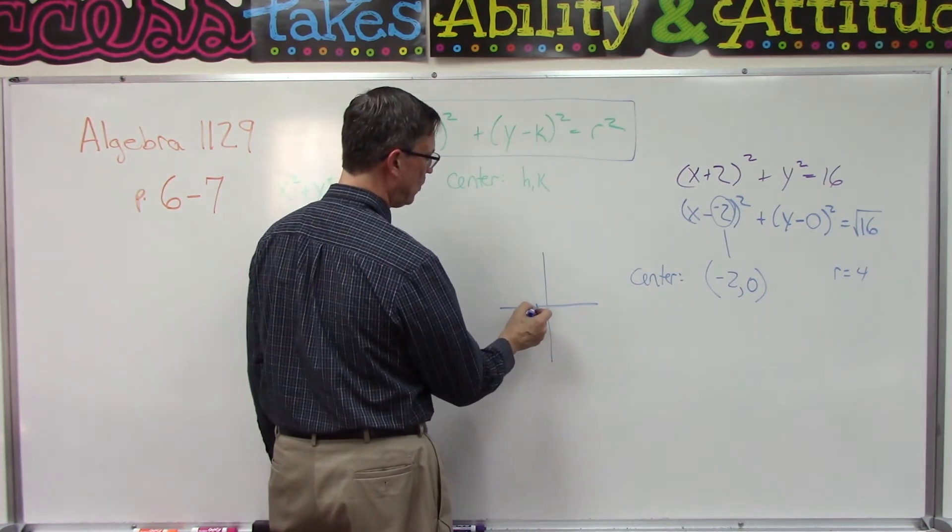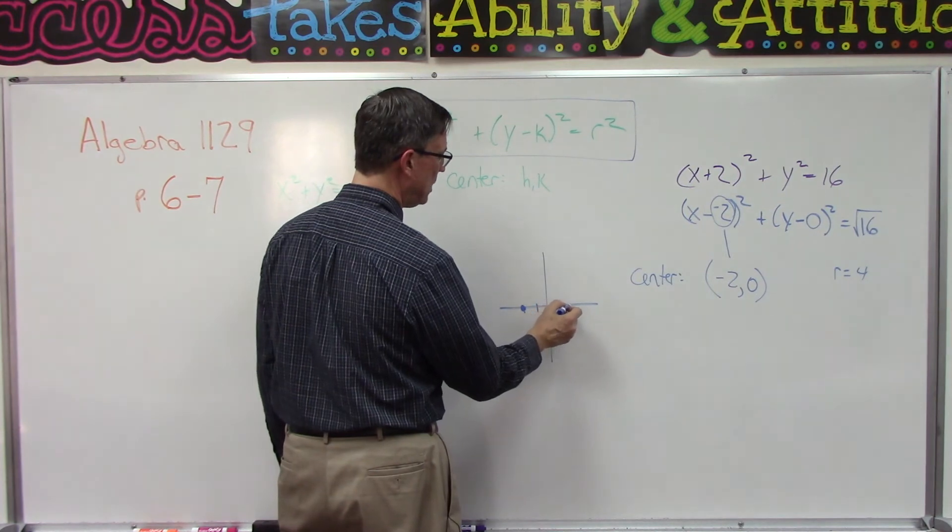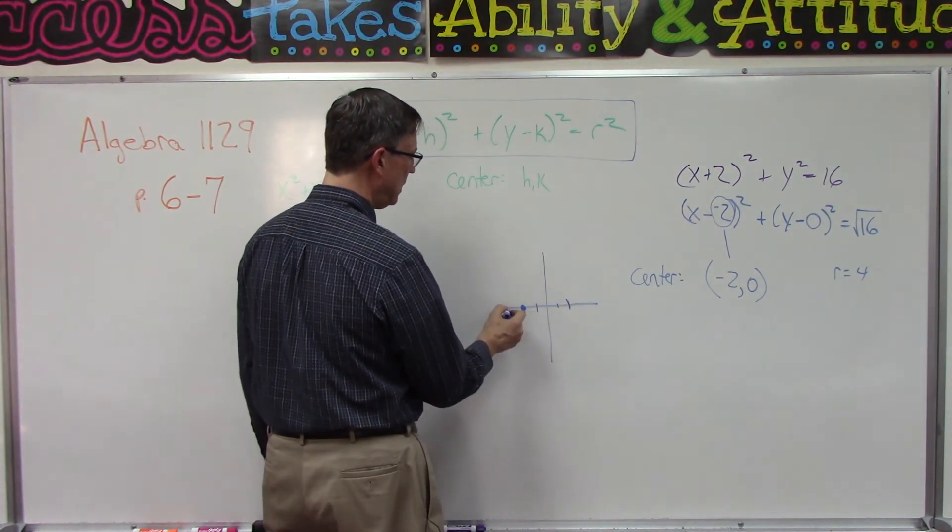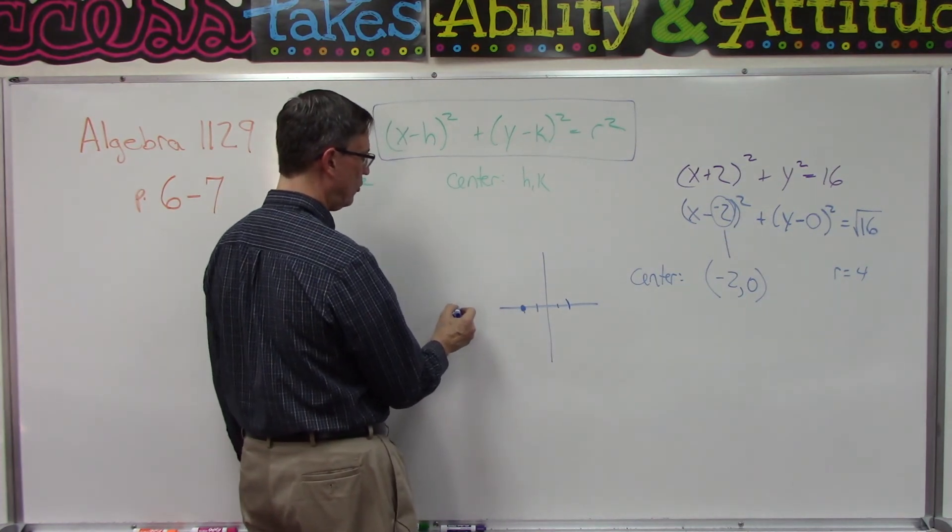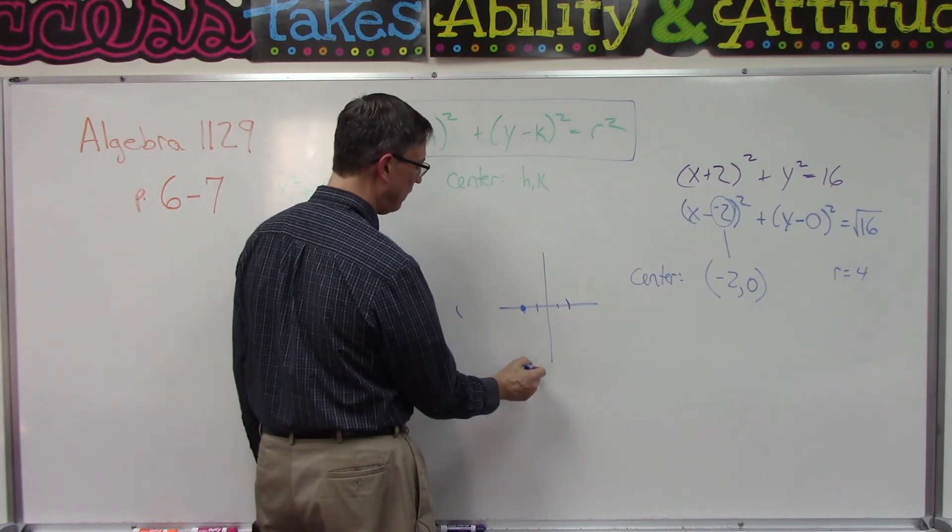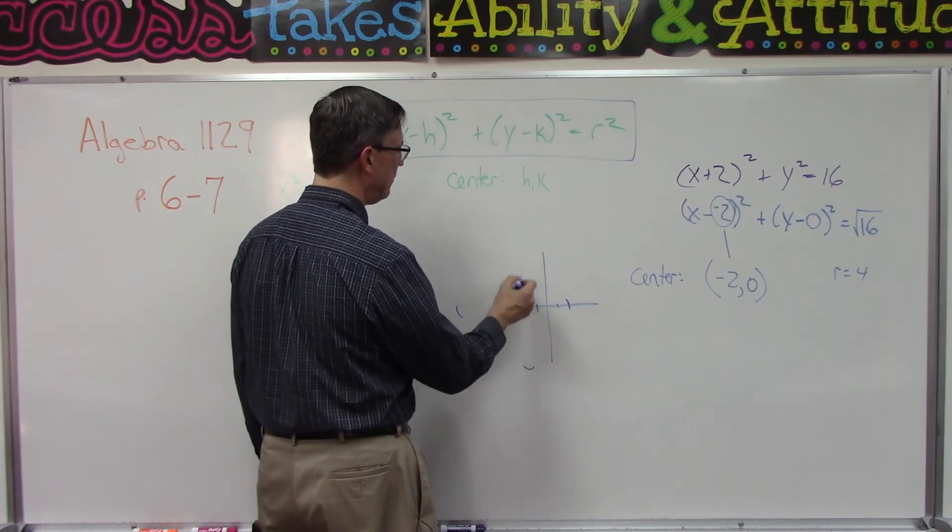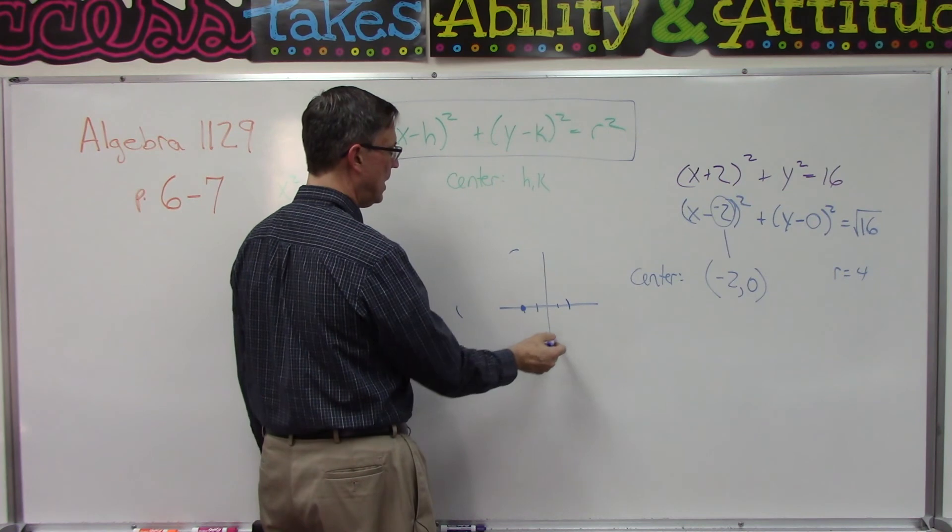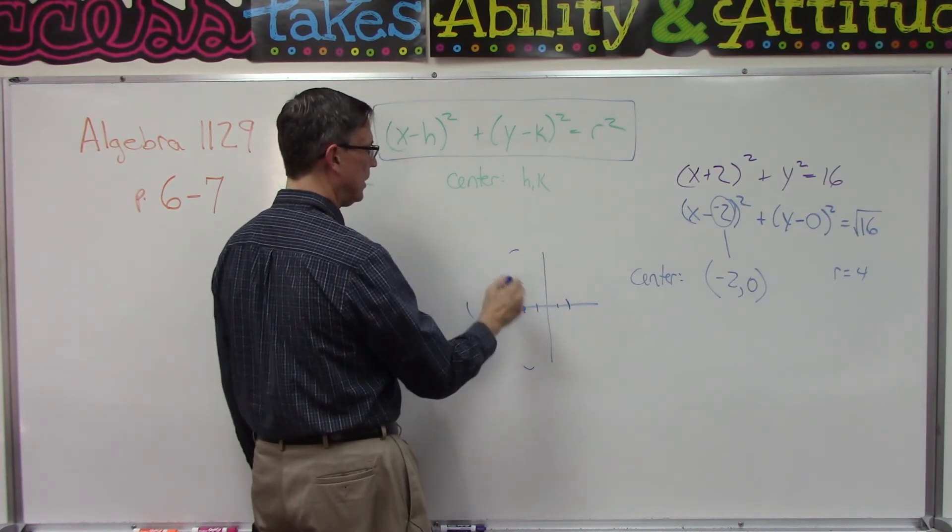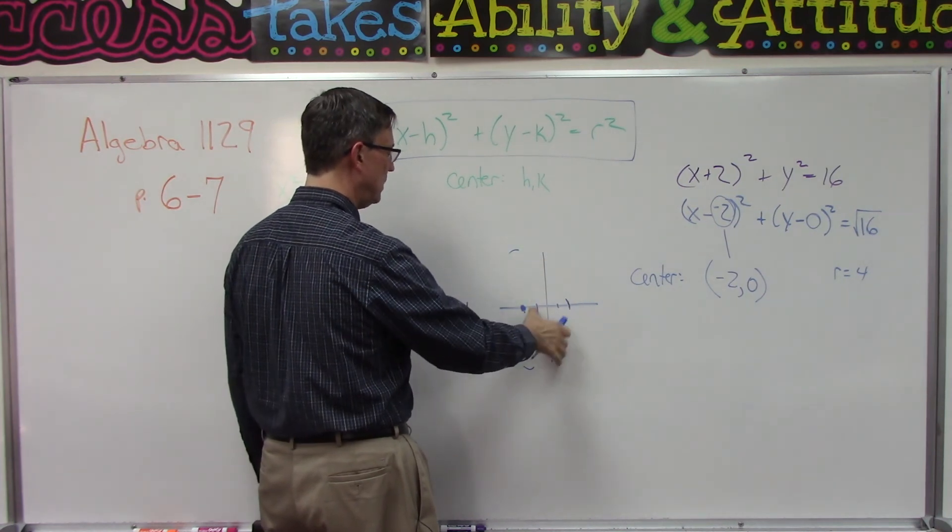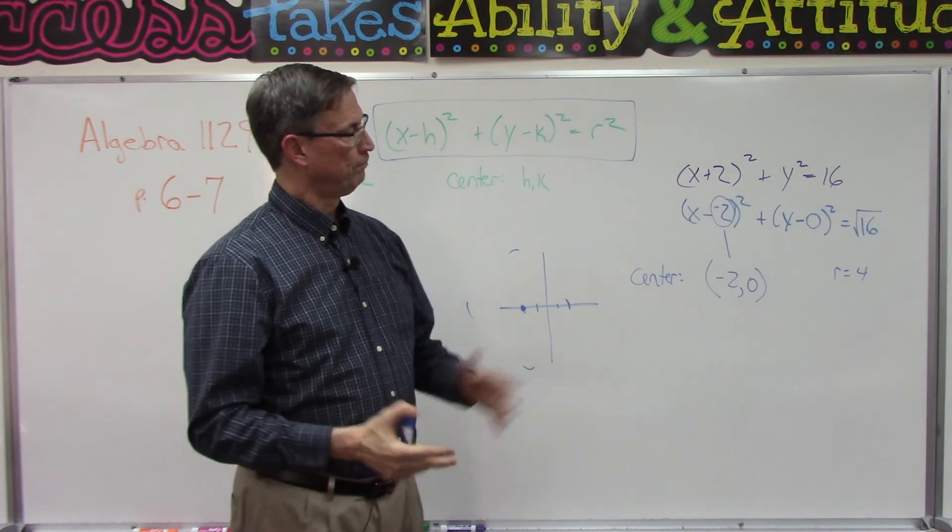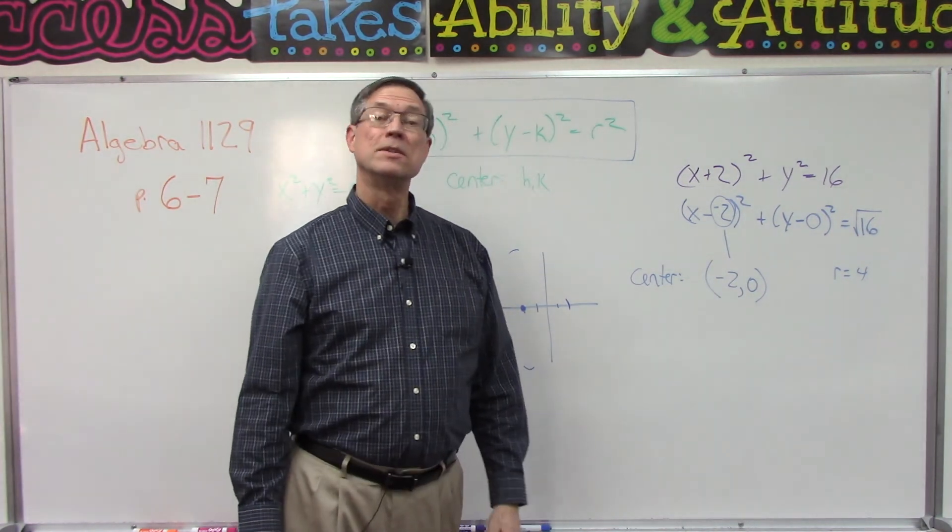So from the center, if I go over one, two, three, four and put a little mark there, and then I need to come way over here, four, put an arc. Come from here down one, two, three, four, put an arc, and then from here up four. And if I did that correctly, which it doesn't look very good, and connect those, that radius should be the same all the way around.